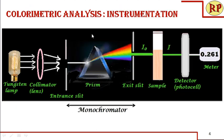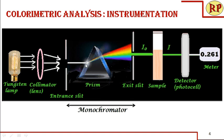Let us look into the outline of the instrumentation of colorimetric analysis. This is a tungsten lamp, which is a source of visible light supplying light between 400 to 750 nm. We use a collimator — a lens — which narrows down the beam and aligns the light. The aligned light is then passed through an entrance slit, where a narrow beam of white light enters. This whole setup is called a monochromator.